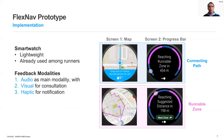The screen can either display a map with the current position and navigation instructions, if any, or a progress bar that also indicates the next milestone of the route.